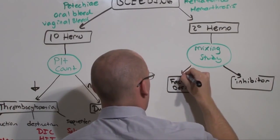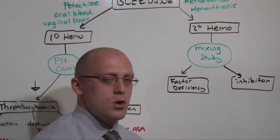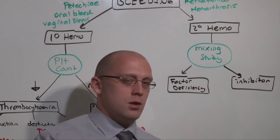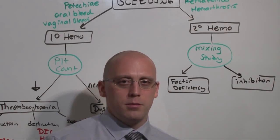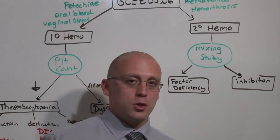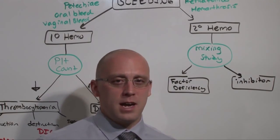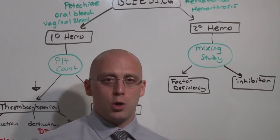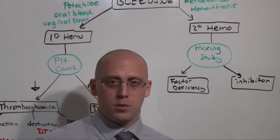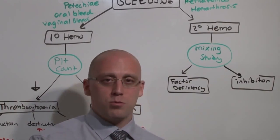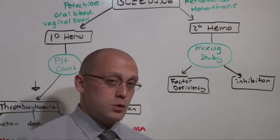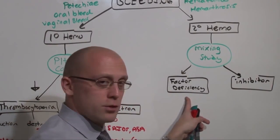Here's how the mixing study works. You take bad blood, the patient's blood, and you mix it with someone's good blood. That other person's good blood is going to have plenty of factors in it. When you mix the two, all of the abnormalities should resolve because you've taken the bad blood without factors and combined it with plenty of factors, and they correct. In that case, you said the original bad blood had a factor deficiency.